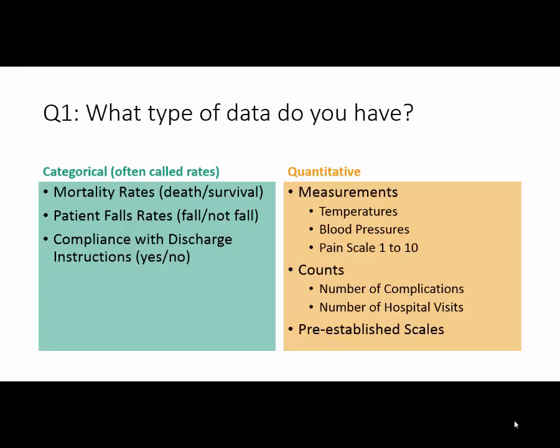Often we count how many answers of each type we get when using categorical data. For example, if I ask a group of people 'do you have any siblings?' and I count the number who say yes, really my data is the yes-or-no answers they gave me — it's categorical data. I'm just counting the number of subjects in my sample to find the proportion who said yes. I'm counting the people; the data is not the counts itself.